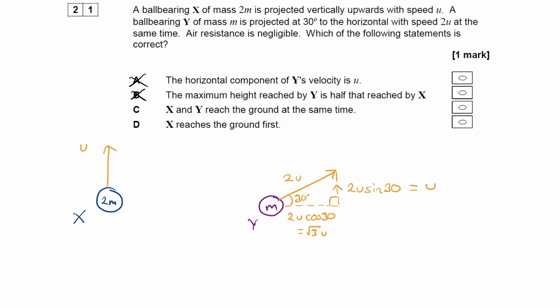They would reach the ground at the same time as one another. The time of flight would be the same. That's not determined by horizontal motion. Time of flight is solely determined by vertical motion. And then for option D, X reaches the ground first. Well, that's similar to option B. The time of flight is just determined by the vertical velocity, which is the same for both particles.